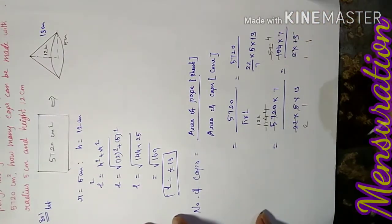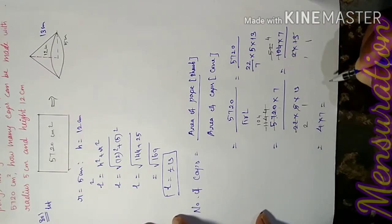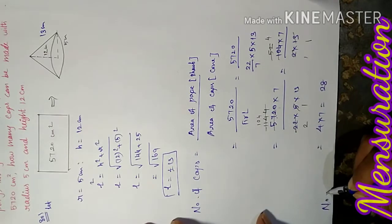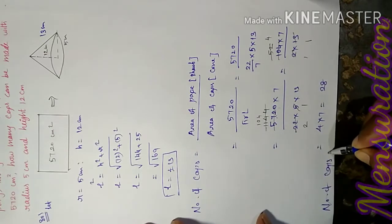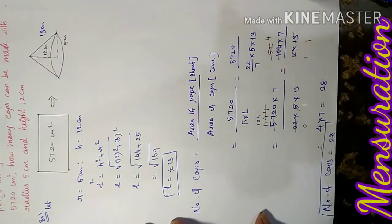Therefore, 4 × 7 = 28. Hence, the number of caps equals 28 caps. Hence proved.